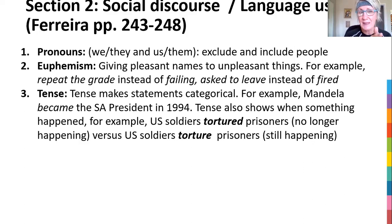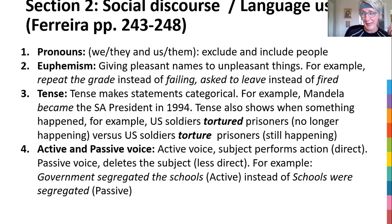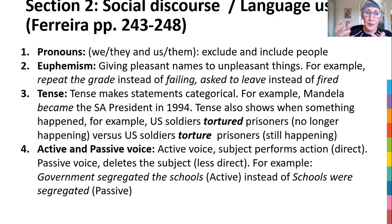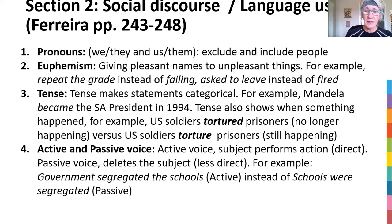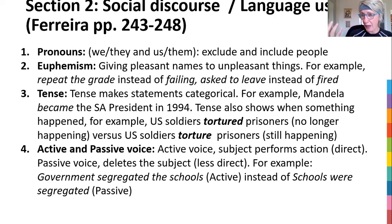You don't have to do all of these social discourse types — you can maybe do four or five, or two or three questions relating to social discourse, but there must be a section on social discourse. Ferreira's got eight; if you can do four, that'll be fine. The last one on this page is active and passive voice. Active voice gets the subject to do the actions, taking ownership — for instance, 'The government segregated the schools': the government is taking blame, it's direct. If I use passive voice, 'Schools were segregated' — you're not saying by whom, you're not saying you did the action, you're taking a back stance and not being direct. If the whole article is written in passive voice, why are they hiding? Why are they not taking ownership for what has actually happened?